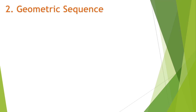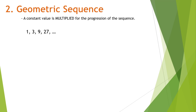Let's have the next type: the geometric sequence. A geometric sequence is described as a sequence where a constant value is multiplied for the progression. So if in arithmetic sequence we are adding a constant value, in geometric sequence we are multiplying a constant value. For example: 1, 3, 9, 27. There is no constant number being added — from 1 to 3 the added value is 2, from 3 to 9 it's 6. Instead, a number is being multiplied: 1 times 3 is 3, 3 times 3 is 9, and 9 times 3 is 27. So positive 3 is being multiplied, making this a geometric sequence.